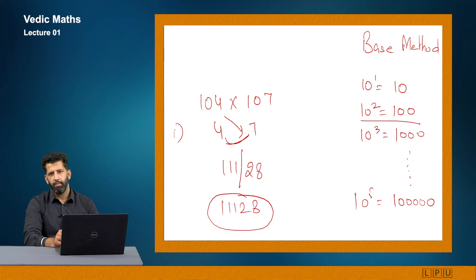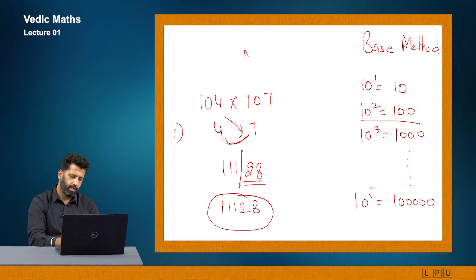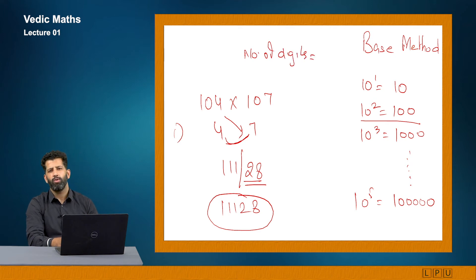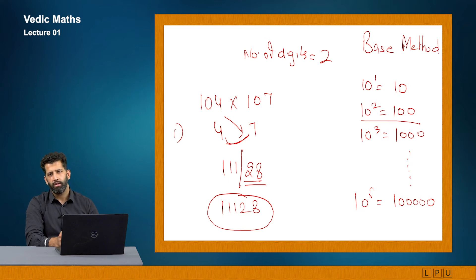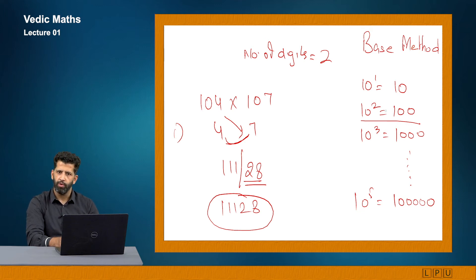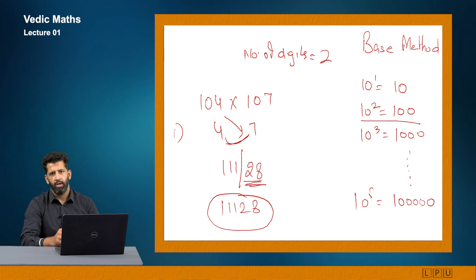The number of digits on the right-hand side is equivalent to the power of 10 taken as base — here 100 is 10² so exactly 2 digits. Let us now multiply 111 with 112.